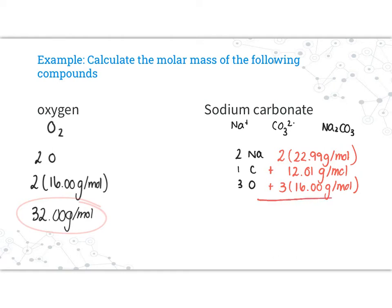Adding up all of those, I get a molar mass of 105.99 grams per mole. I don't round up. I keep two decimal places in my molar mass.